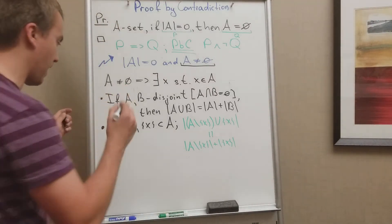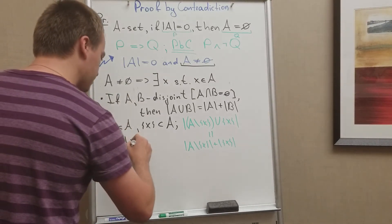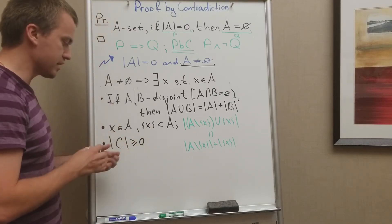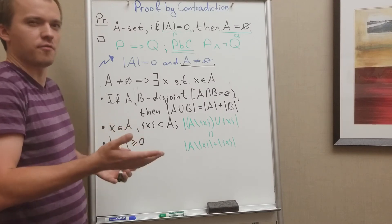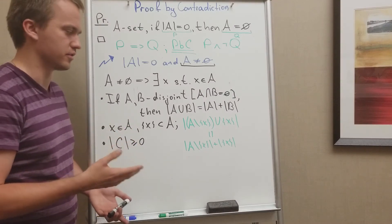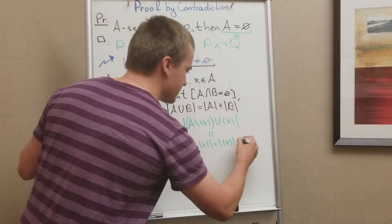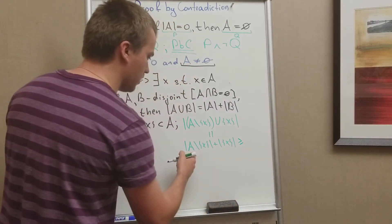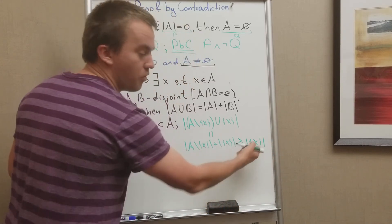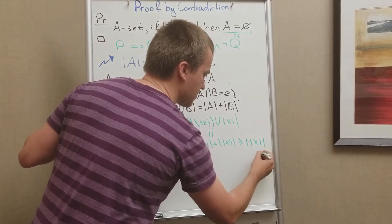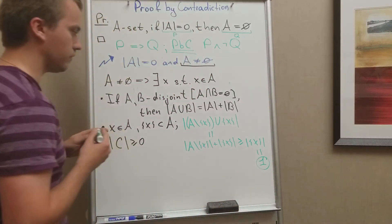Now I use another fact: the cardinality of any set C is greater than or equal to zero, because cardinality counts the number of elements and you cannot have a negative number of elements. Therefore, the cardinality of A is greater than or equal to just the cardinality of {x}. And the cardinality of the singleton set {x} is exactly one.